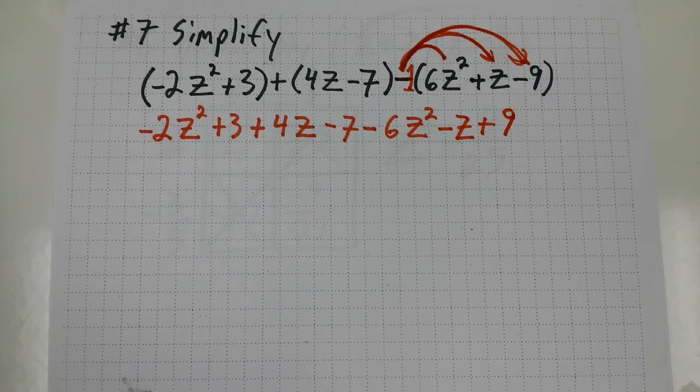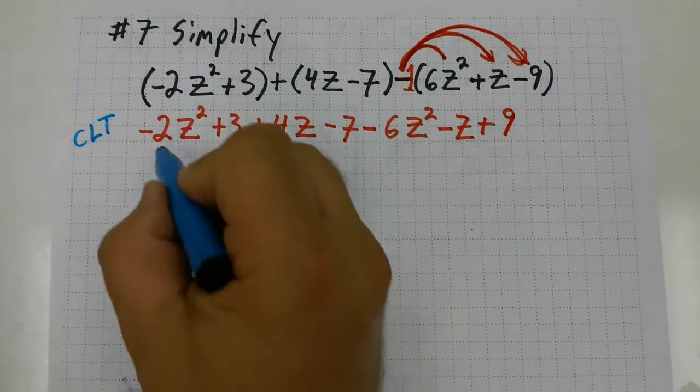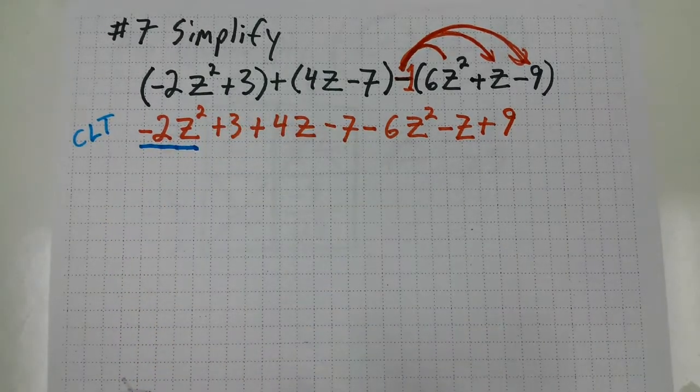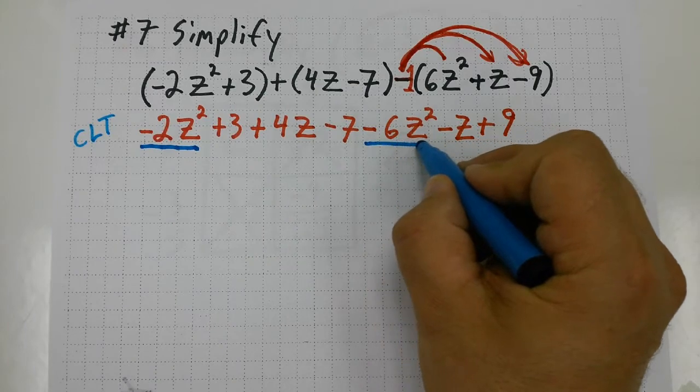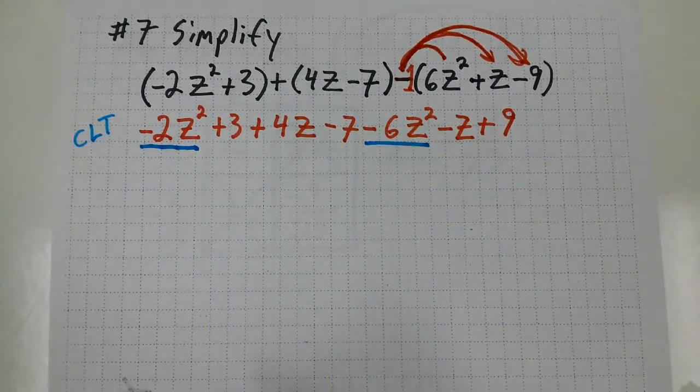Now once I'm at this stage, I'm going to combine like terms. So I need to see if there's anything like negative 2z squared. Well, negative 6z squared has the same exponent for the variable, so that's going to give me negative 8z squared.